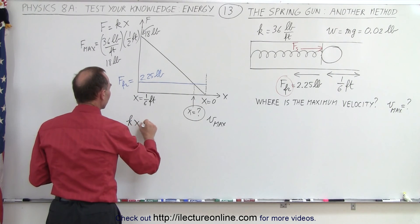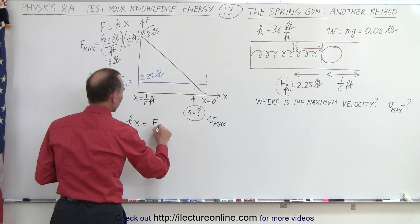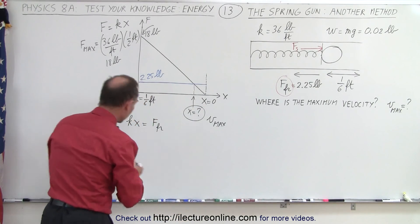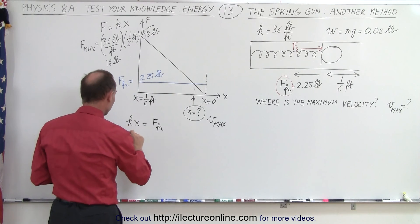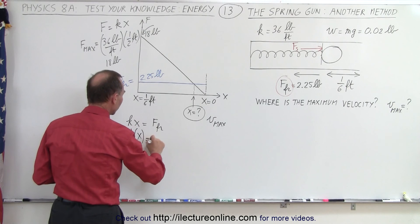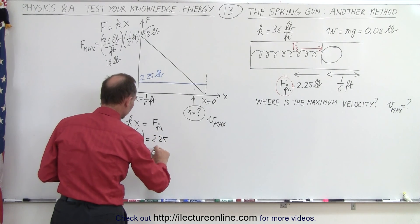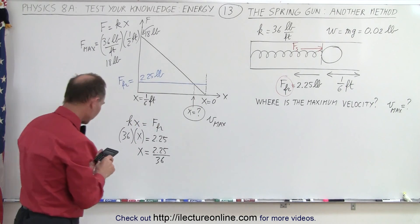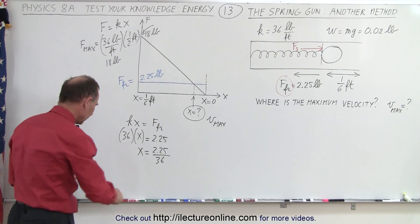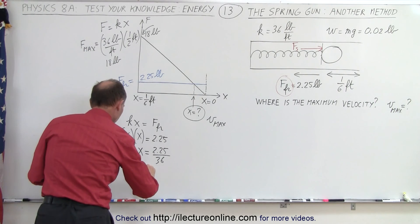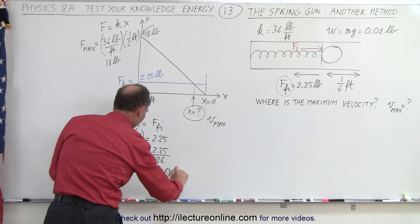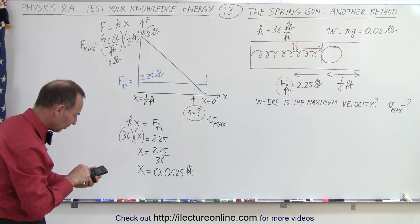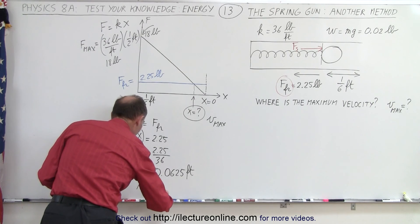We can say that kx is equal to the friction force. So k times x, that would be 36 times x, is equal to 2.25. So x is going to be equal to 2.25 divided by 36. With a calculator, 2.25 divided by 36 equals x equals 0.0625 feet. And converting to a fraction, that means x is equal to 1/16th of a foot.